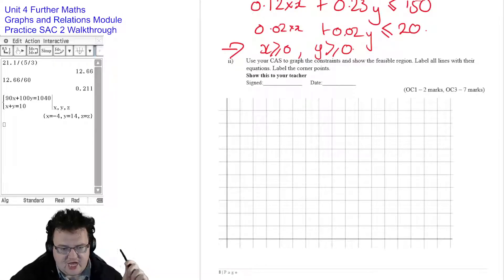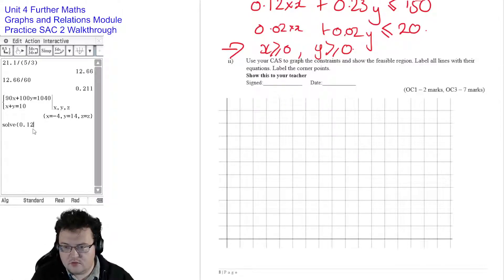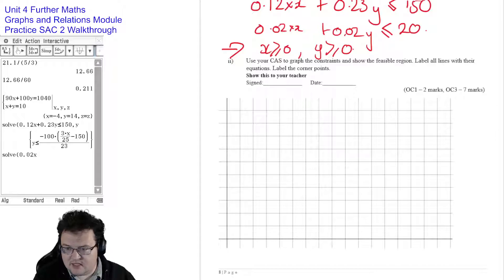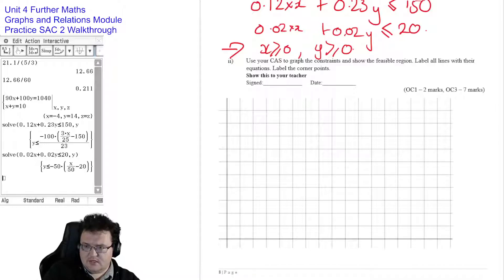So first things first, we need to rearrange our inequalities so that we can use our CAS for them. So solve. And again, we want to go to math 3, and we want to solve for Y because it's easier to do. That's a mess, but that's fine. We can work with that. Solve, and then we've got 0.02X plus 0.02Y is less than 20. I'm going to solve that for Y as well. So we've got that one as well.